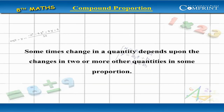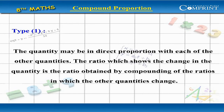Compound Proportion: Sometimes change in a quantity depends upon the change in two or more other quantities in some proportion. Type 1: The quantity may be in direct proportion with each of the other quantities. The ratio which shows the change in the quantity is the ratio obtained by compounding of the ratios in which the other quantities change.